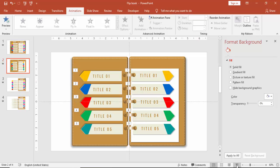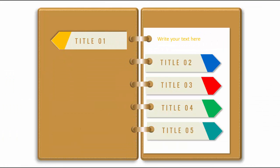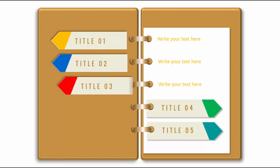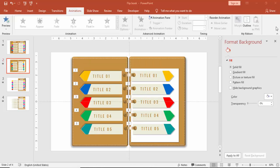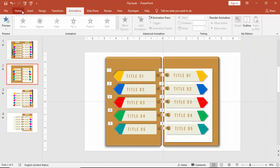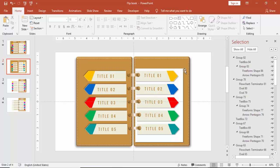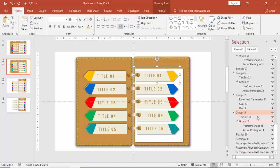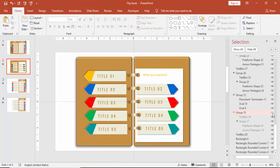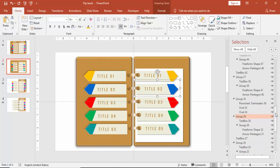In slide show view it will display all titles: one, two, three, four, and five. To change the color of the title text — since it's hidden behind the arrow — go to Home, Select All, and then select the specific arrow in the selection pane.